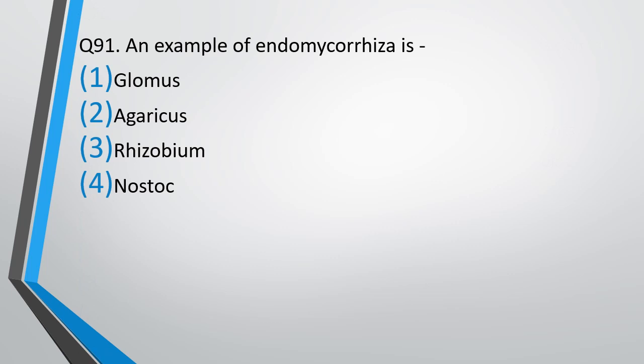Question number 91. An example of endomycorrhizae is: Glomus, Agaricus, Rhizobium, or Nostoc? The correct answer is option 1, Glomus.